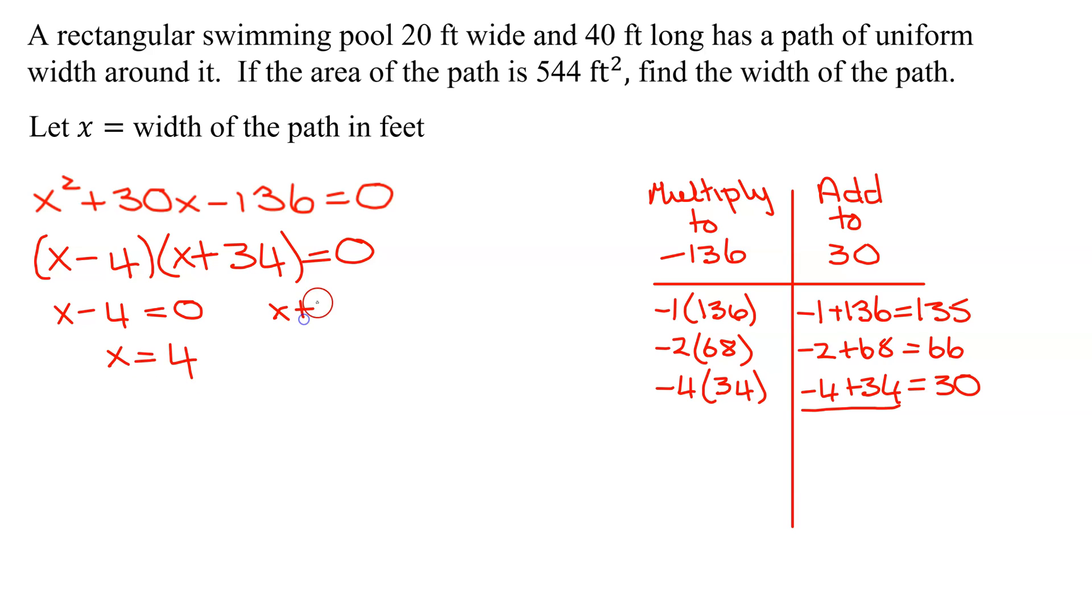The second one, x plus 34 equals 0. Subtract 34 from both sides. You get x equals negative 34. Now don't forget x is the width of the path in feet. Can you have a width of a path being negative 34 feet? No, it doesn't make sense. So you know x has to equal 4 feet. So the width of the path is 4 feet.